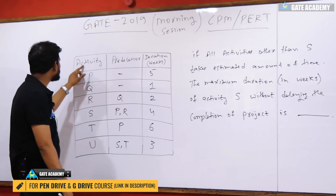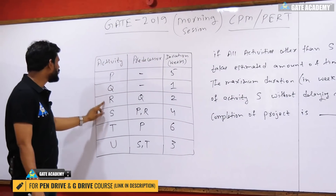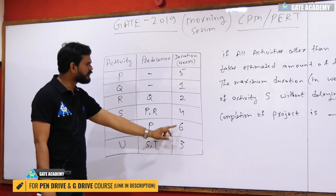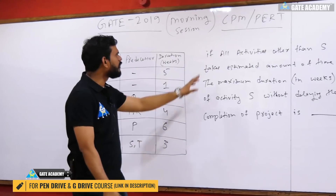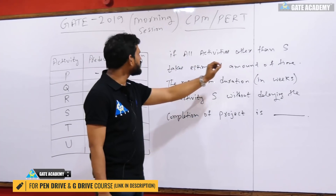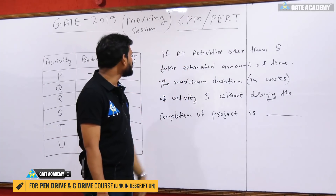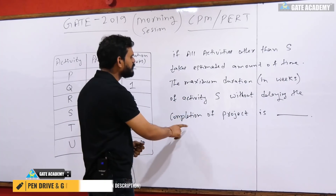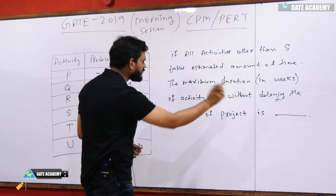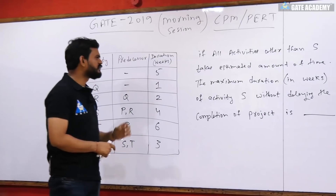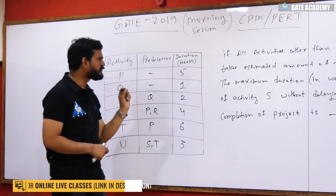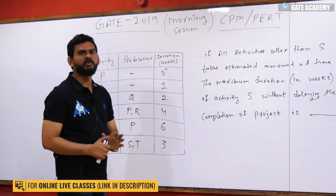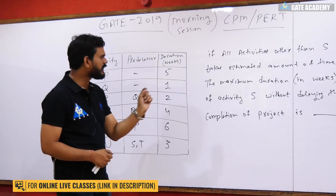The problem is that the activities are P, Q, R, S, T, U, with given predecessors and durations in weeks. If all activities other than S take their estimated amount of time, the maximum duration in weeks of activity S without delaying the completion of the project is what? Only S can be delayed — tell us the maximum duration of S if you don't delay the project.